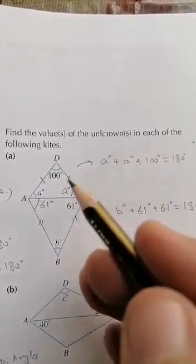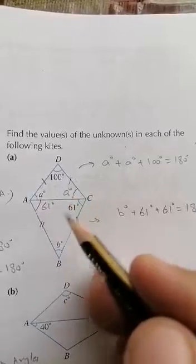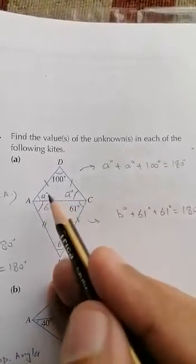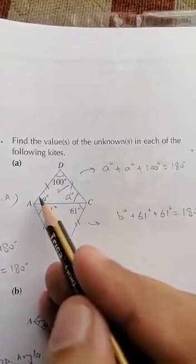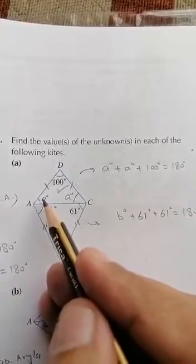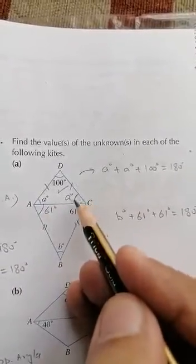We are going to solve these two triangles separately. Now if we look at this isosceles triangle ADC, this angle is given in the question and it is labeled as a.